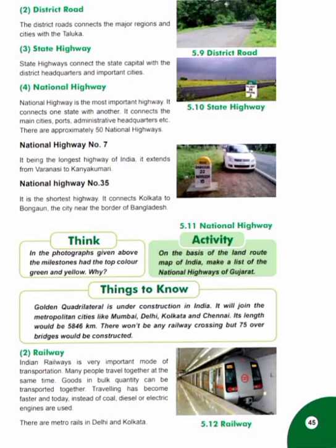11. Things to know: Golden Quadrilateral is under construction in India. It will join the metropolitan cities like Mumbai, Delhi, Kolkata and Chennai. Its length would be 5,846 km. There won't be any railway crossing but 75 over bridges would be constructed.